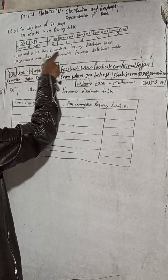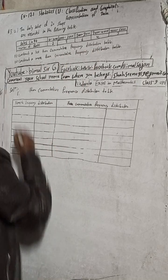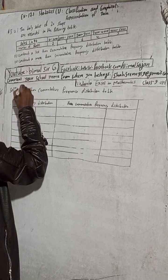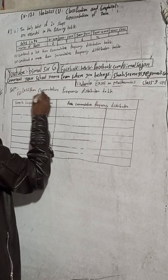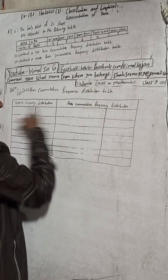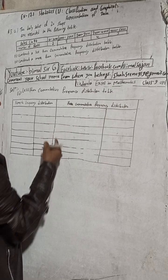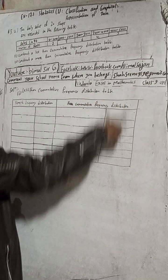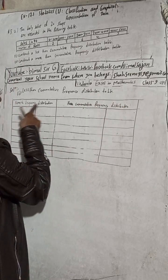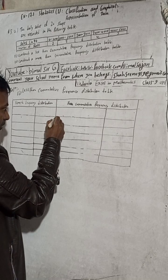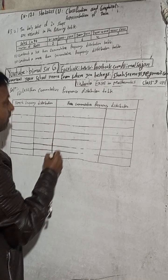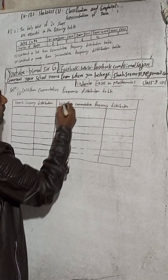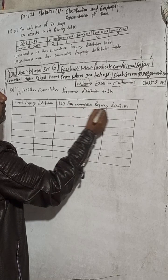The first question is to construct a less than cumulative frequency distribution table. So here is the solution. I will write the less than cumulative frequency distribution table. I have already drawn the simple frequency distribution table, and after that I will draw the less than cumulative frequency distribution table.